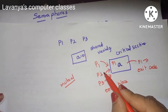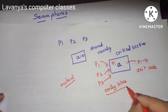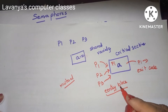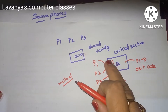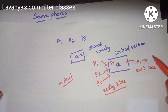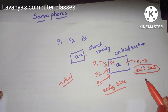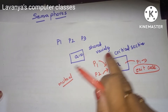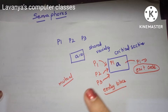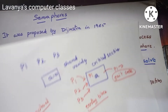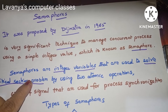Whenever any process enters the critical section, we need to execute the entry block operation. After finishing work, to exit the critical section we execute the exit code. This entire work is checked by the semaphore, which is an integer variable.